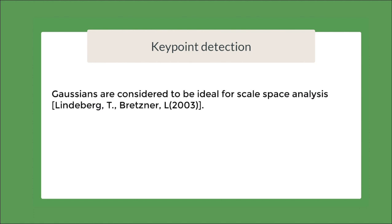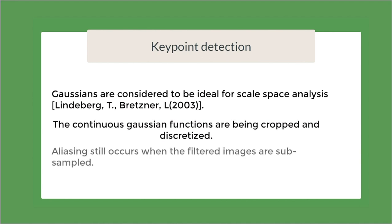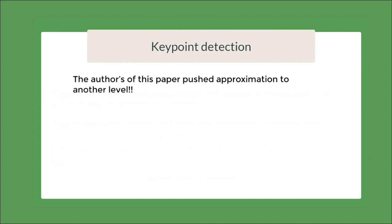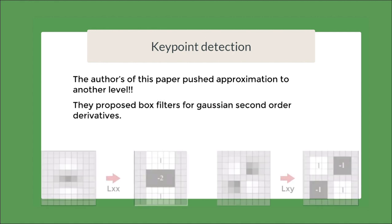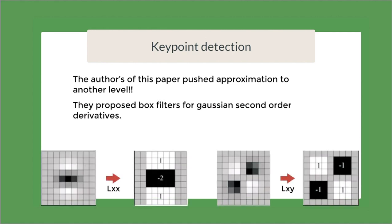Gaussians are considered to be ideal for scale-space analysis. But in practice, we crop and discretize the continuous Gaussian functions. And also, it has been observed that even with Gaussian filtering, aliasing still occurs during subsampling of the filtered images. So, given the non-idealities of the Gaussians and the David Lowe's successful approximation of LOG, the authors pushed the approximation to another level. They proposed box filter approximation for the Gaussian second-order derivatives.